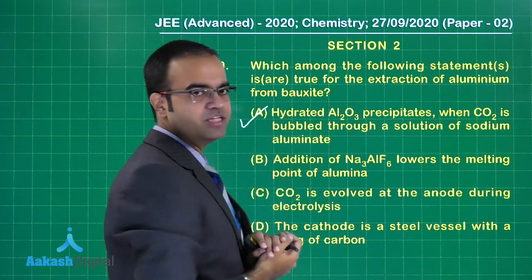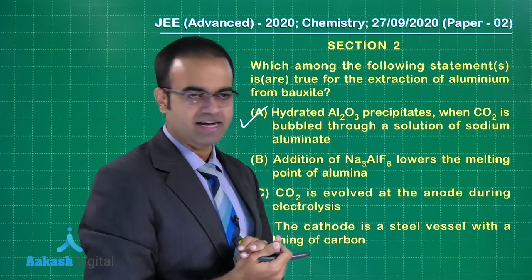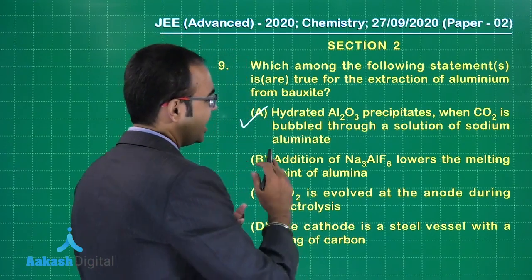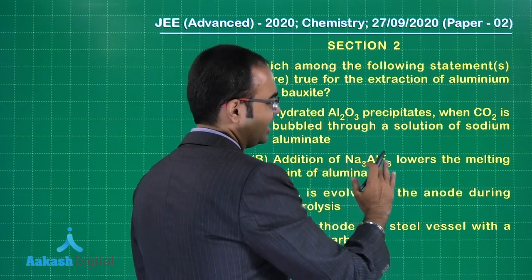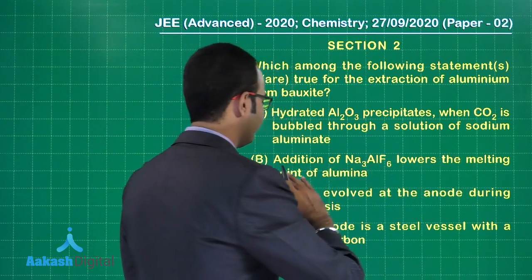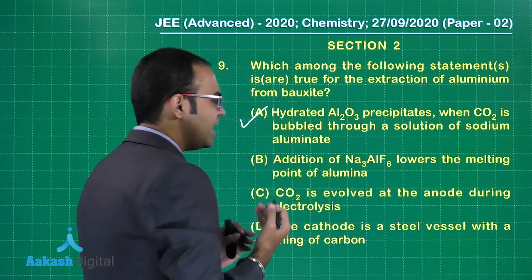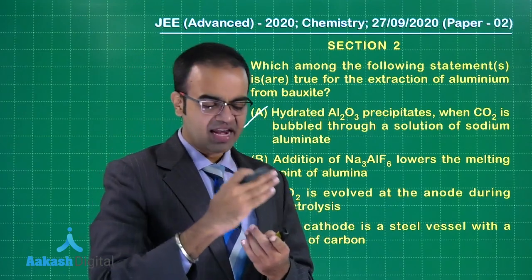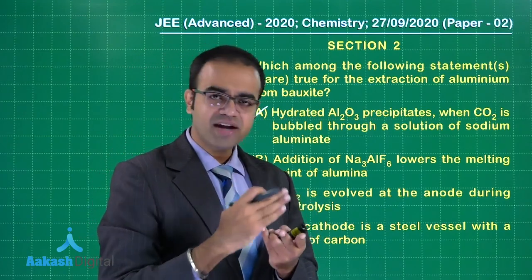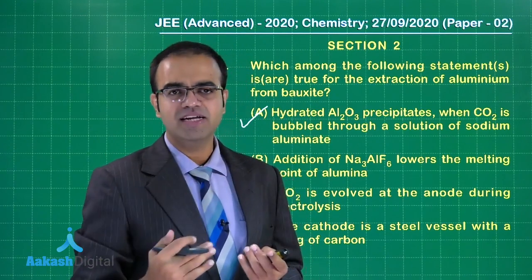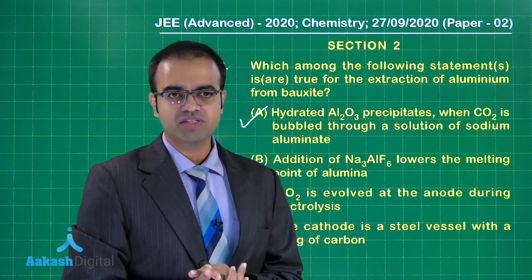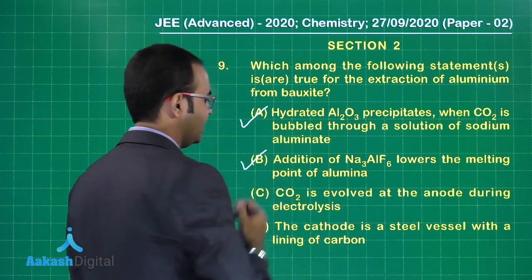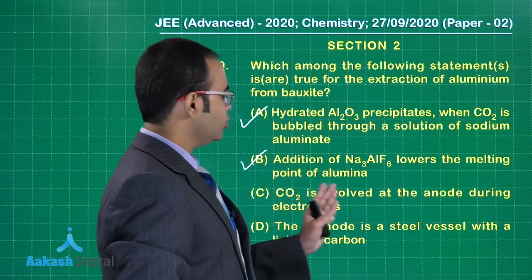Option B: addition of Na₃AlF₆ lowers the melting point of alumina (Al₂O₃). As you add Na₃AlF₆ and CaF₂, the melting point is lowered. So option B is also correct.